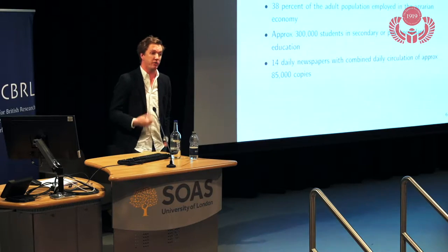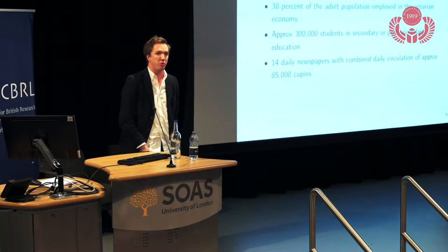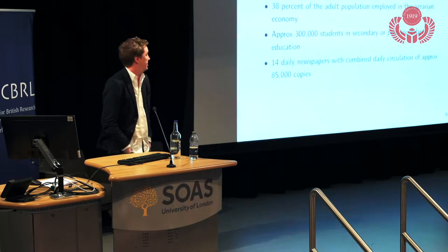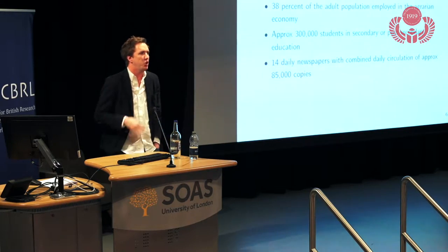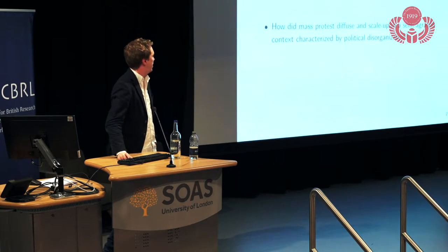It's worth reflecting on what Egypt looks like in March 1919. We have a census from 1917: the median literacy rate is about 11 percent; for men it's higher, but nearly 40 percent of the adult population are employed in the agrarian economy—they're literally fellaheen, peasants. At the same time, we have nearly 300,000 students in some form of tertiary or secondary education, and 14 daily newspapers with a combined daily circulation of about 85,000 copies. The key question is: how did mass protest diffuse and scale up in a semi-agrarian context characterized by political disorganization and the absence of strong movements?